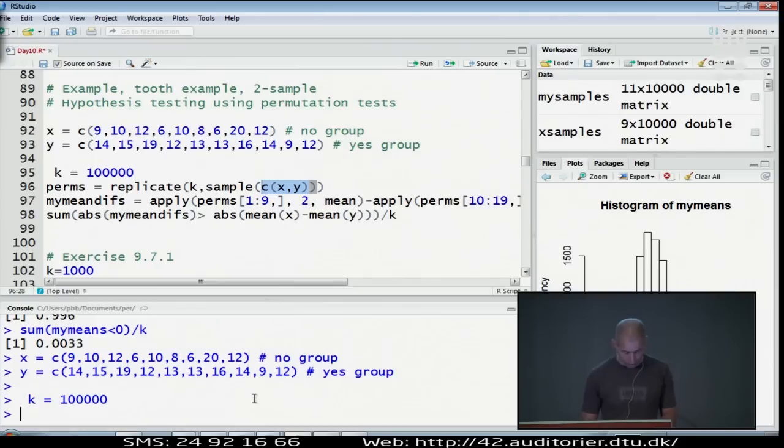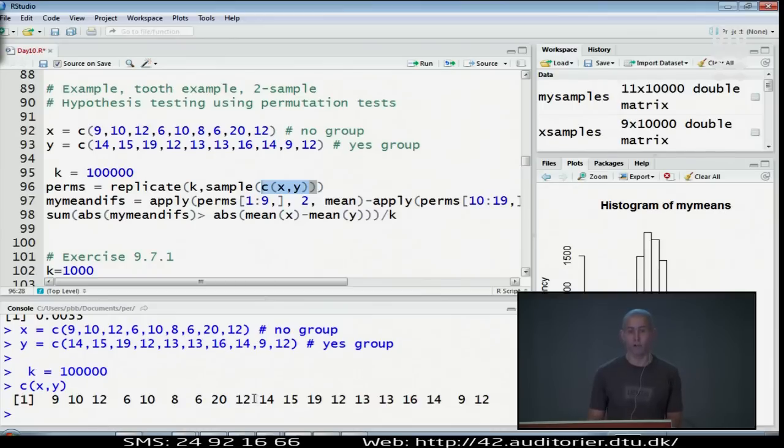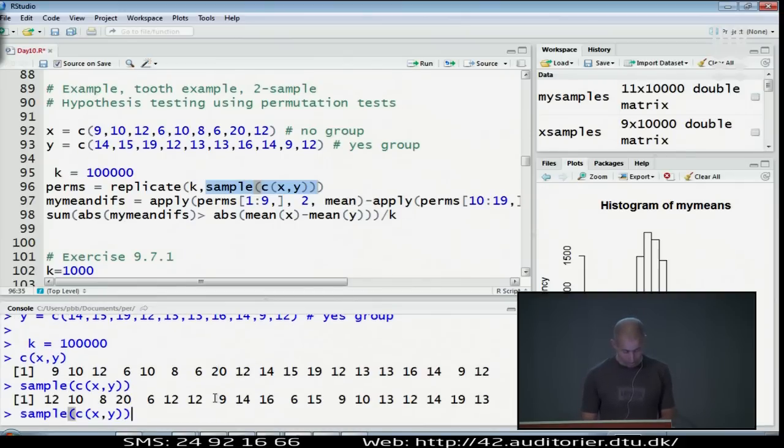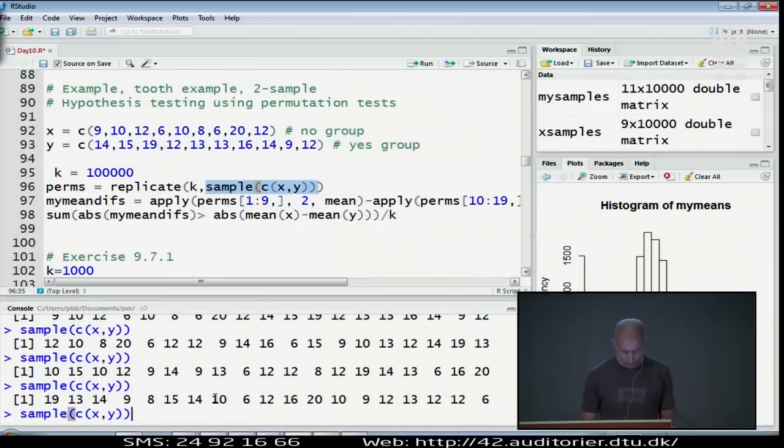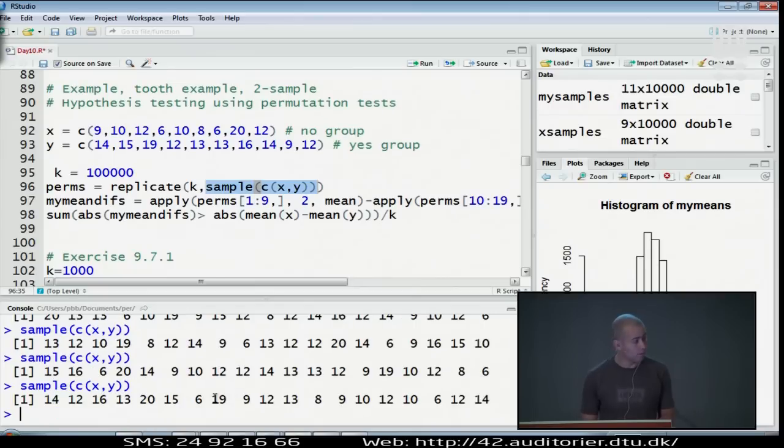We can sample directly from the joint data set. This is a way in R to make the joint list of the joint data set to use the C, concatenate. Here is the joint data set. I sample from this joint data set. And when I don't write any, the default option for the sample function is to do it without replacement. Which means that this is simply a permutation of the data. It's just shuffling the data. I think we have 19 data points here. It's the same 19 data points shuffled.